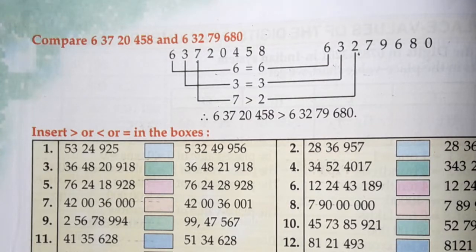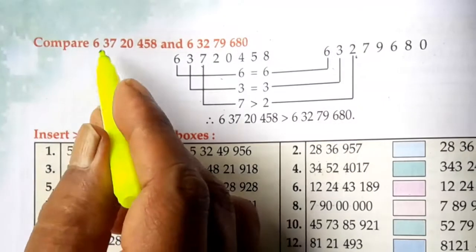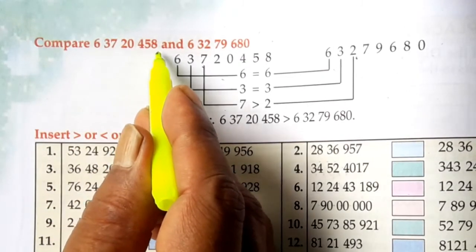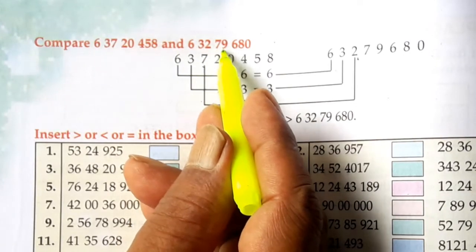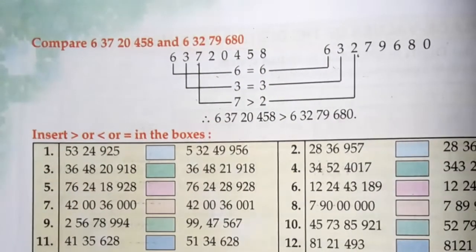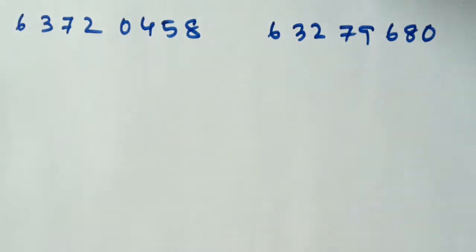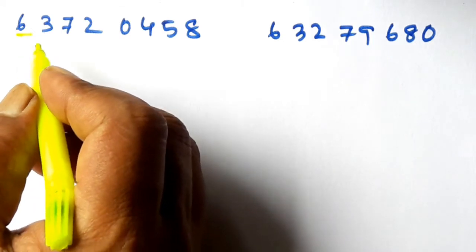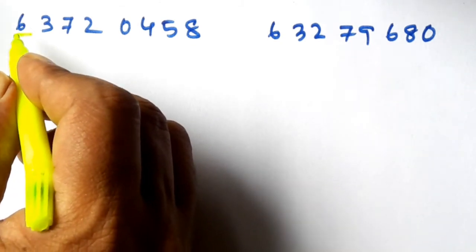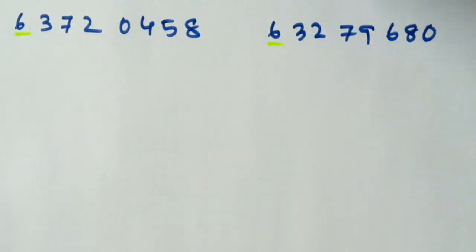Now we will compare between two numbers. The numbers are given: one is 63720458 and the next number is 63279680. To compare two numbers, if the number of digits are equal, then we compare digit by digit. We write the question, and in the first place of the first number is 6, and that of the second is also 6. So we compare the next digit.